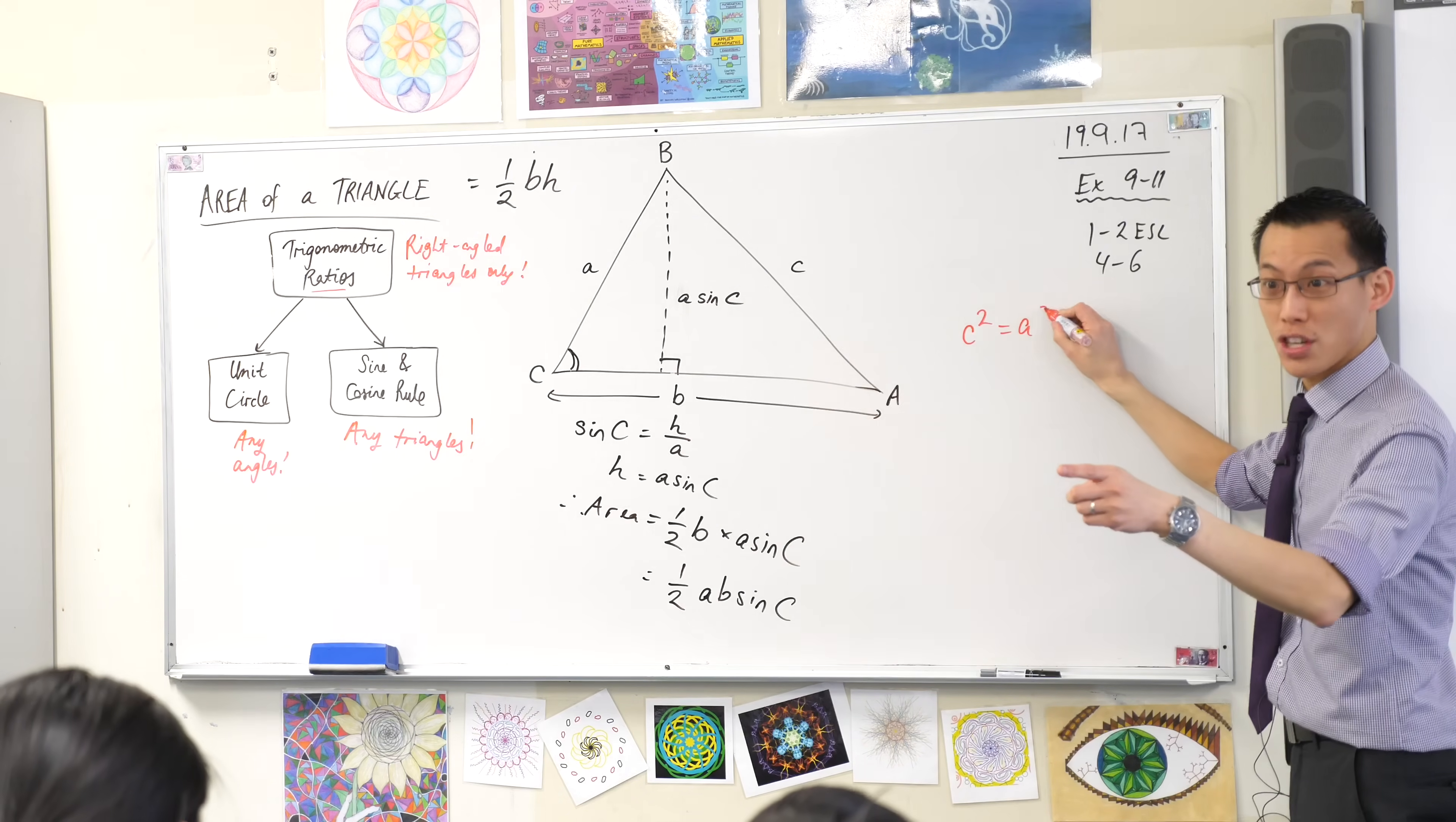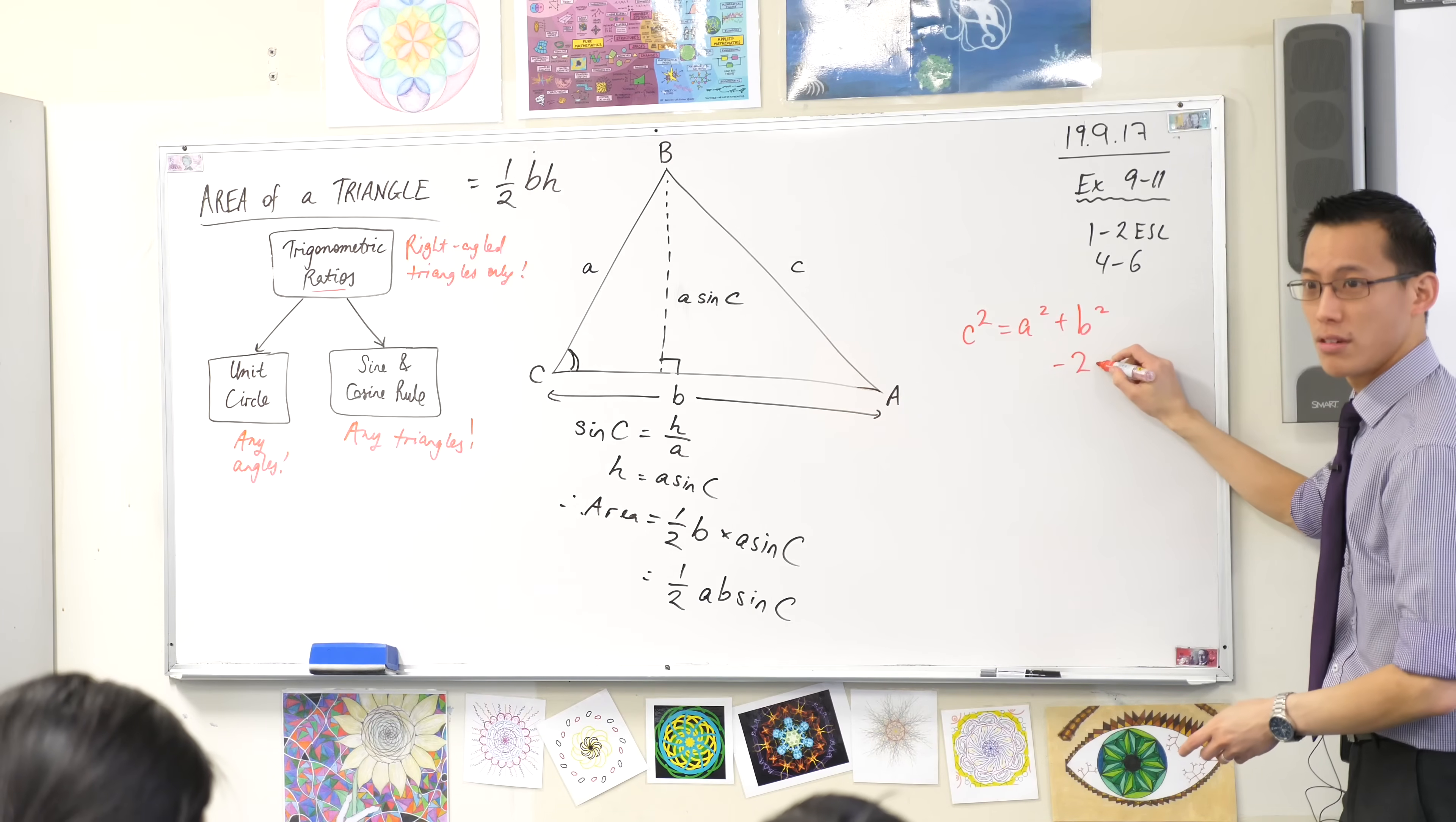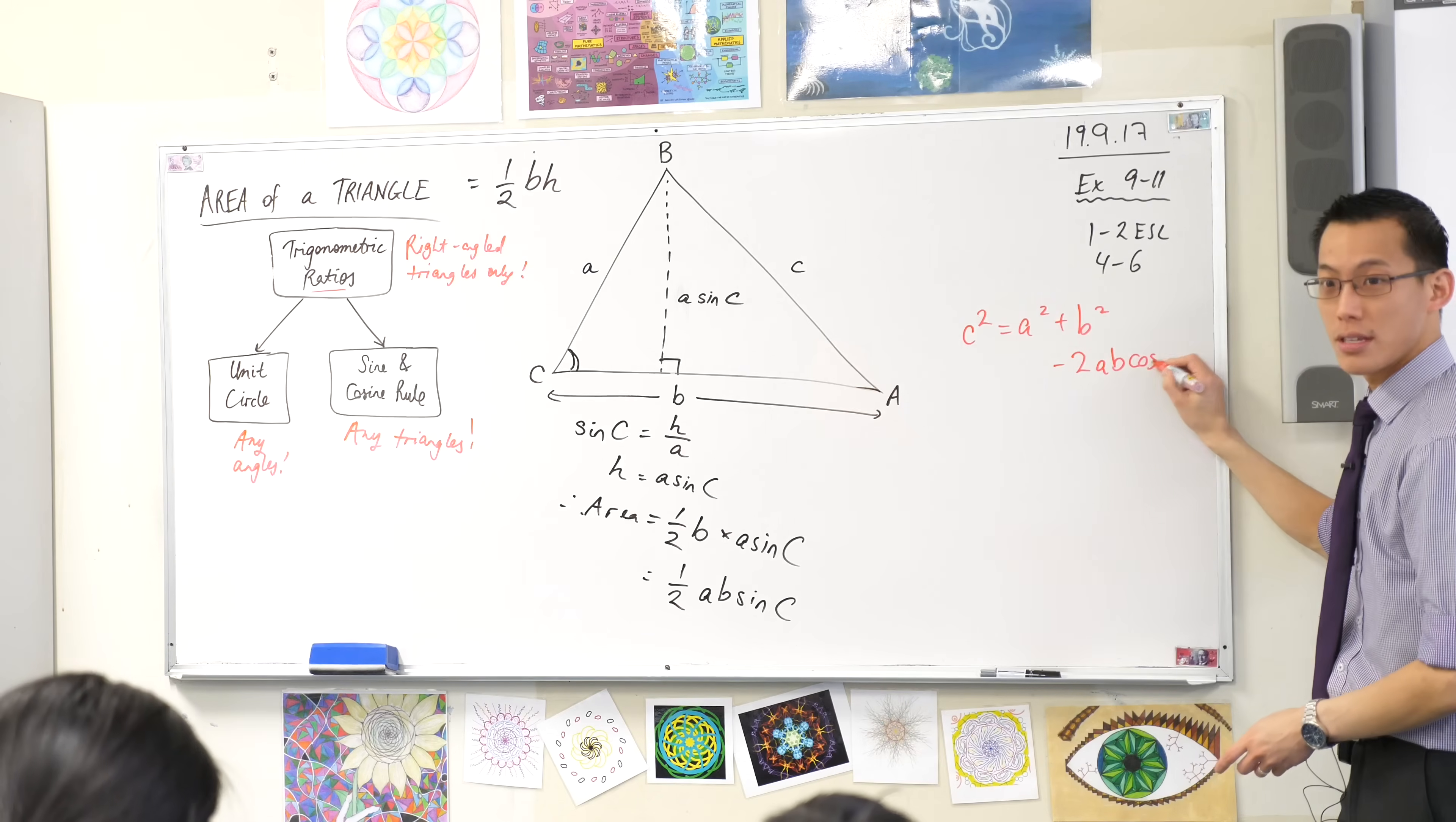It starts with C squared. Ah, very good. It starts off just like Pythagoras. You remember that? But then there's like an extra bit. Minus 2 A B cos C.